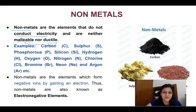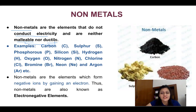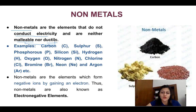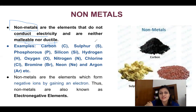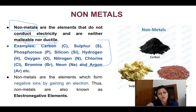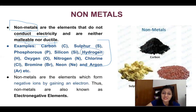I hope these terms — malleability and ductility — are clear, as we covered them in the last video with examples. The non-metals we have already seen in our periodic table are all present on the right-hand side. But there is one exception: hydrogen is a non-metal but is present on the left side of the periodic table.